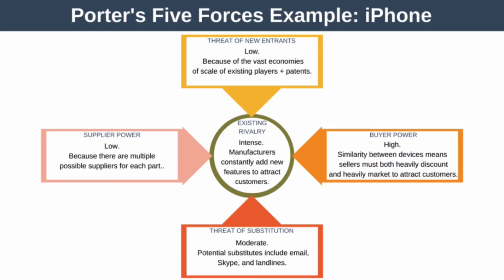The threat of new entrants is actually low because of the vast economies of scale held by the major players and their patents. Buyer power is actually high — buyers number in their hundreds of millions each year but have high bargaining power because devices are so similar, meaning manufacturers have to heavily discount and heavily market their products to attract customers. The threat of substitution is moderate — in the mid-2000s, cell phones were used for phone calls and text messages, so potential substitutes include email, Skype, and landlines. Finally, supplier power is low as there are multiple possible suppliers for most components.